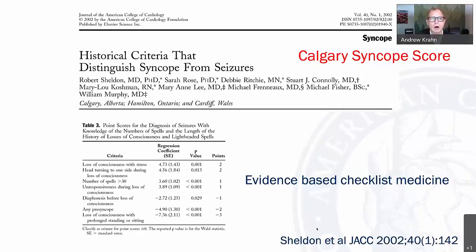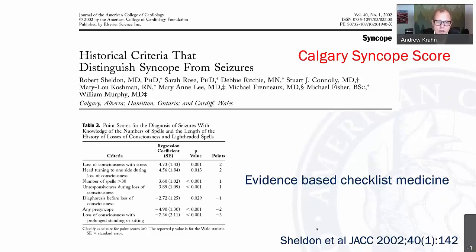Guidelines co-director Dr. Robert Sheldon went through the process of identifying all the questions we ask patients with syncope, and through a structured process using a large cohort of diagnosed syncope patients, identified the seven most relevant to arriving at a diagnosis. Here are those seven questions: a positive or negative score directs you toward either seizures versus syncope. For experienced clinicians who see many syncope patients, this may seem simple, but it's also a powerful teaching tool.